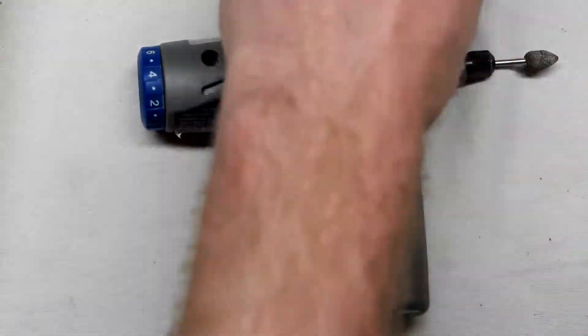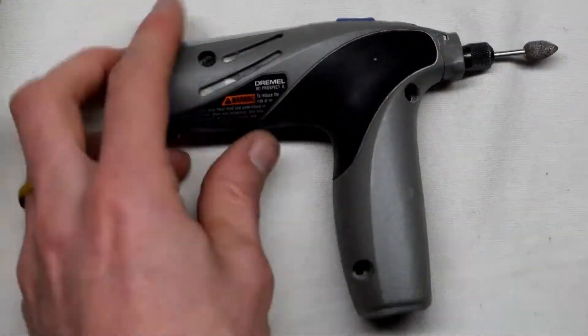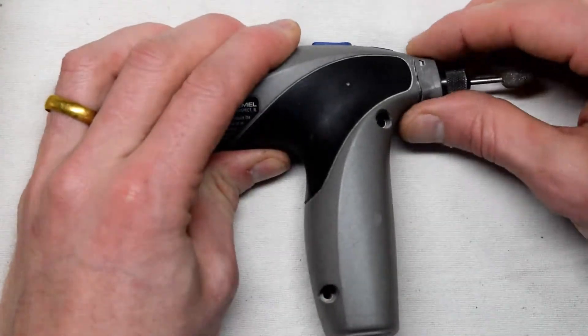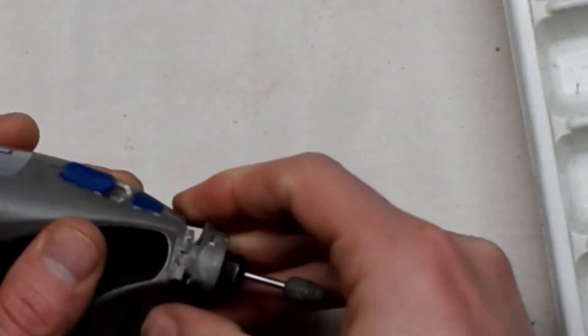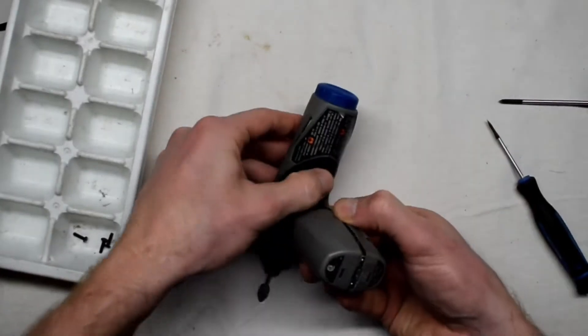There are three screws on the front, and then there's this little clip at the front that you're going to have to pry off. I was able to pry it off with my fingers, and then just using a flathead screwdriver, go around.